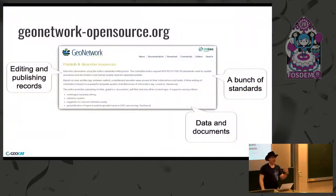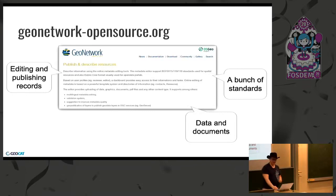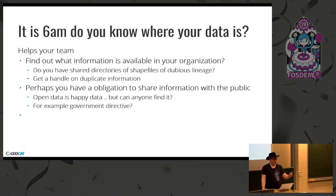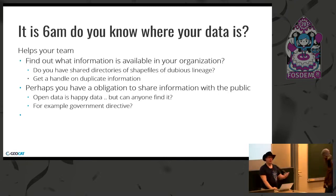The next part is about editing and publishing your own records. GeoNetwork supports a whole range of standards and can manage both your data and your documents. It follows OGC standards. You can have catalogs that harvest from other catalogs to bring up all this information and really help with discovery. It's also relatively flexible for configuration and security, supports harvesting from other catalogs, and has a lot of analysis available on what data sets and records are actually being used. You might use it if you have a government obligation to share with the public — in Europe, the INSPIRE program is really popular for this.